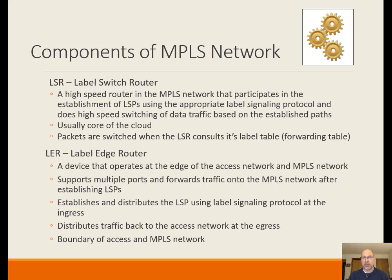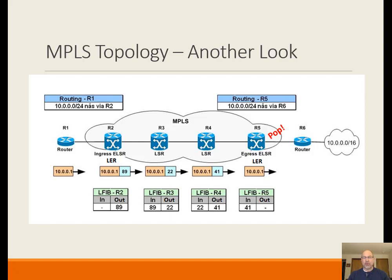A label switched router is one of the high-speed routers — it's just forwarding things based on the tags, not adding or removing them. It looks up its label table to see what the mapping is supposed to be. It's usually at the center of the cloud, not at an ingress or egress point. The label edge routers at the ingress and egress either start or end the tagging process. Looking again at our MPLS topology, R2 and R5 are both label edge routers, defining the boundary of our MPLS cloud regardless of which direction traffic is flowing.